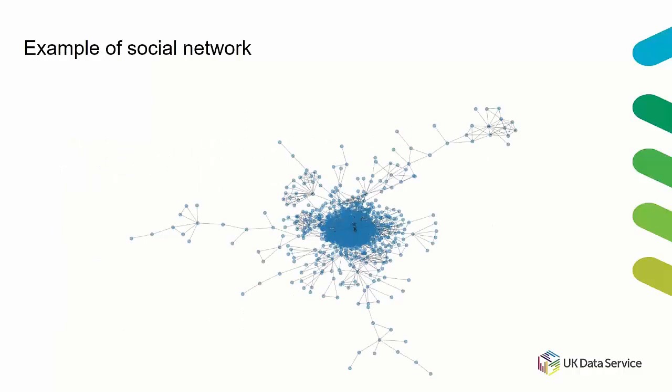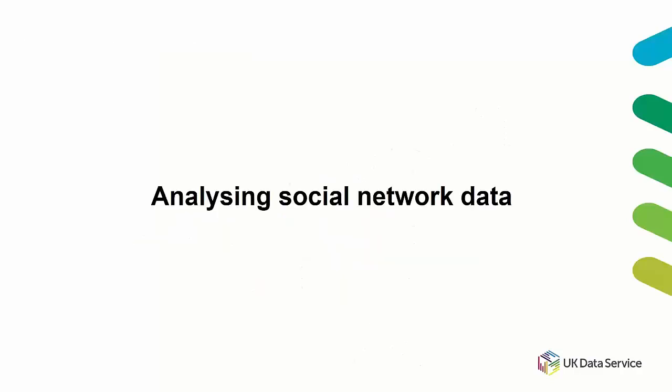This is a real social network from my own research area of charitable organizations - Manchester-based charities and all the connections that exist between them. We won't be analyzing this specific network today, but something reasonably similar to do with charities. Visualization is an interesting first step in analysis, though it's insufficient on its own. Just by looking at it, we can see a central cluster of charities that are densely connected, and some on the outside with only one or two connections.